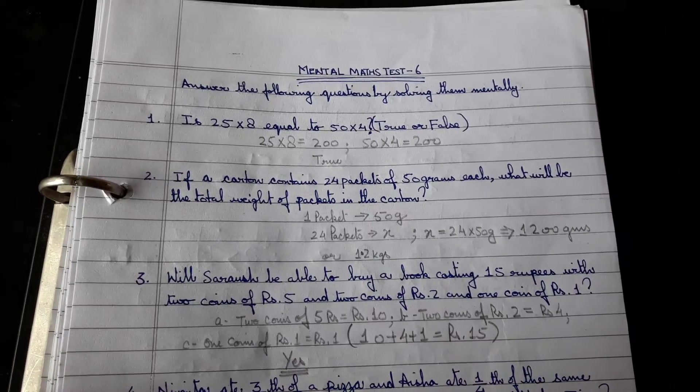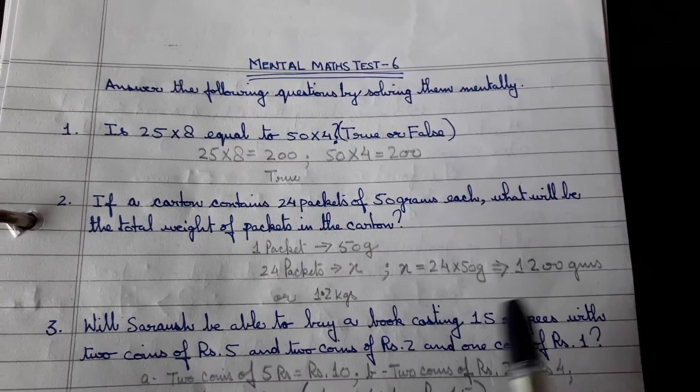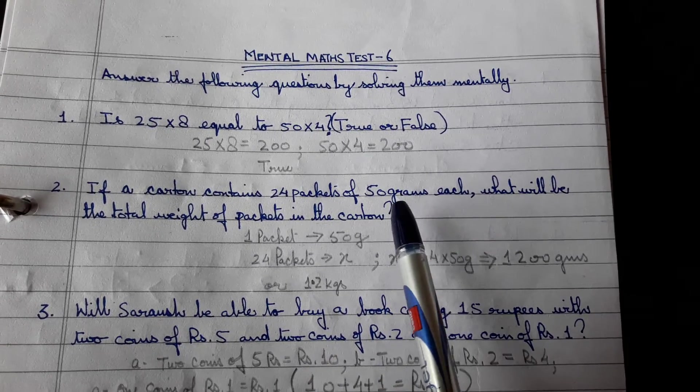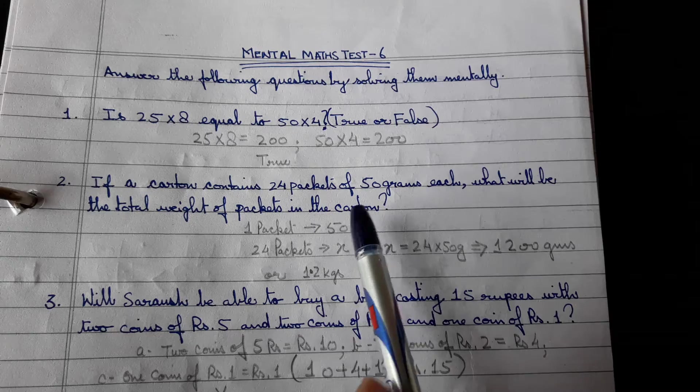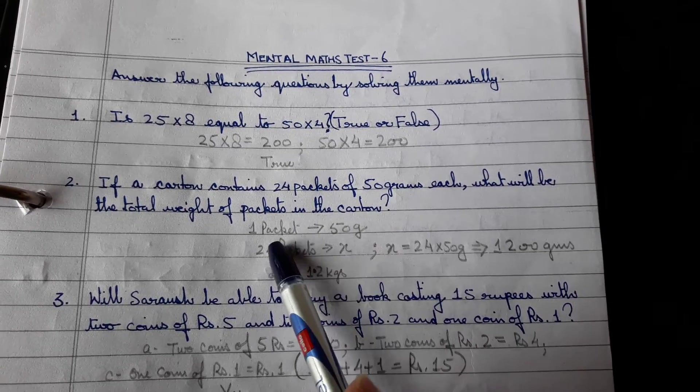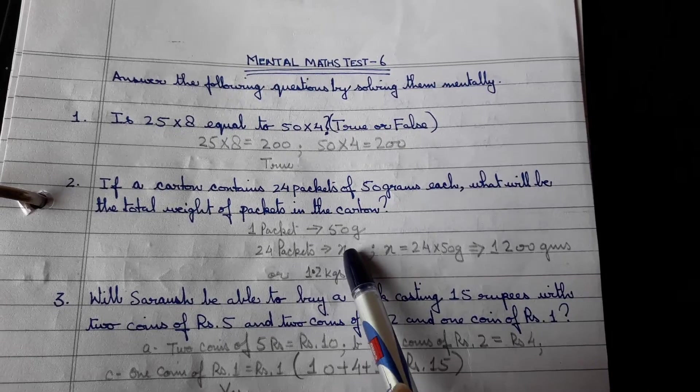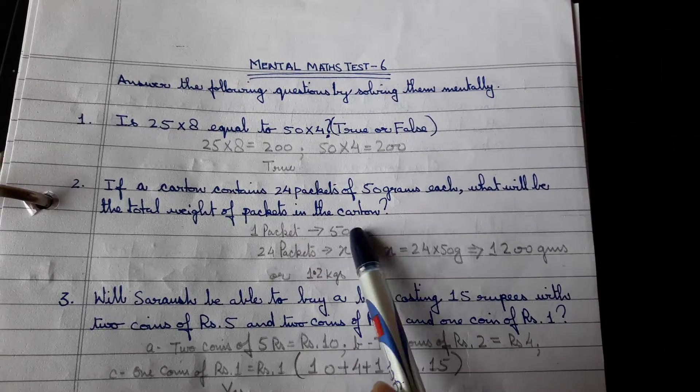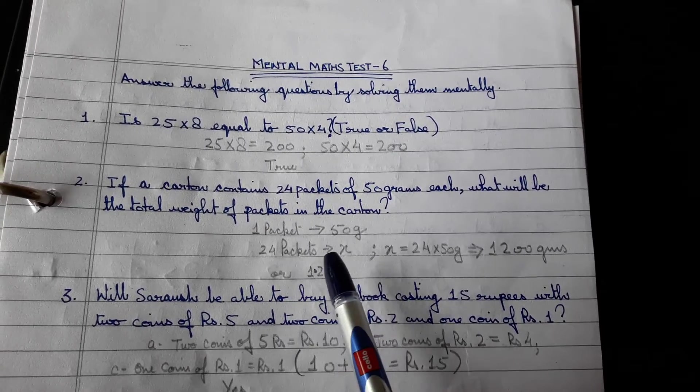Now let's look at the next one. If a carton contains 24 packets of 50 grams each, what will be the total weight of packets in the carton? So I have already told you to cross multiply. One packet 50 grams, 24 packets will be x. Cross multiply. So x will be 24 into 50, 1200 grams or 1.2 kgs.